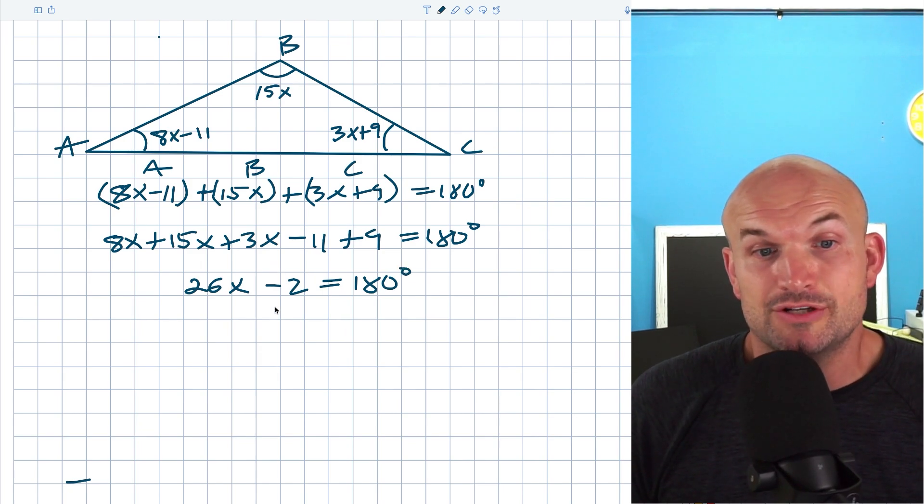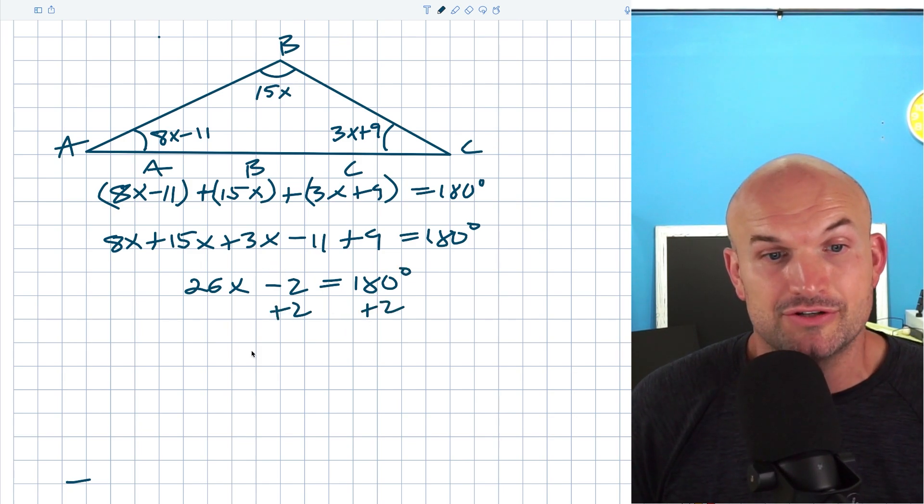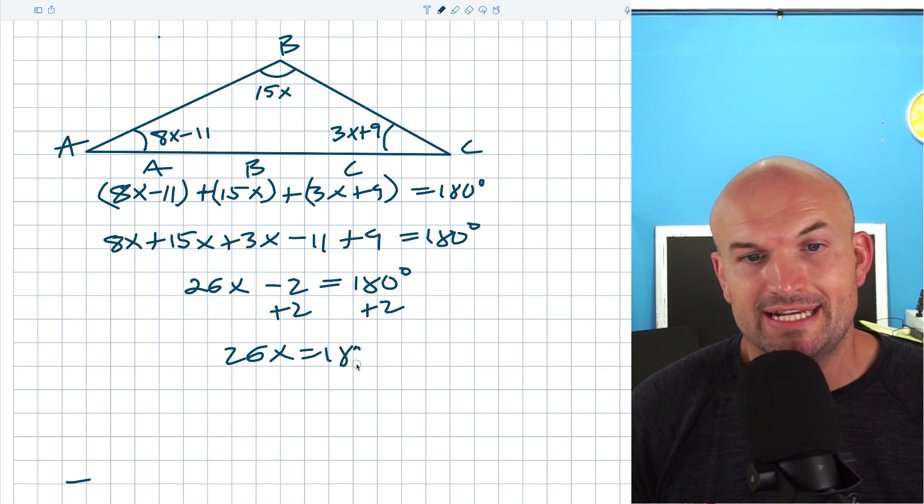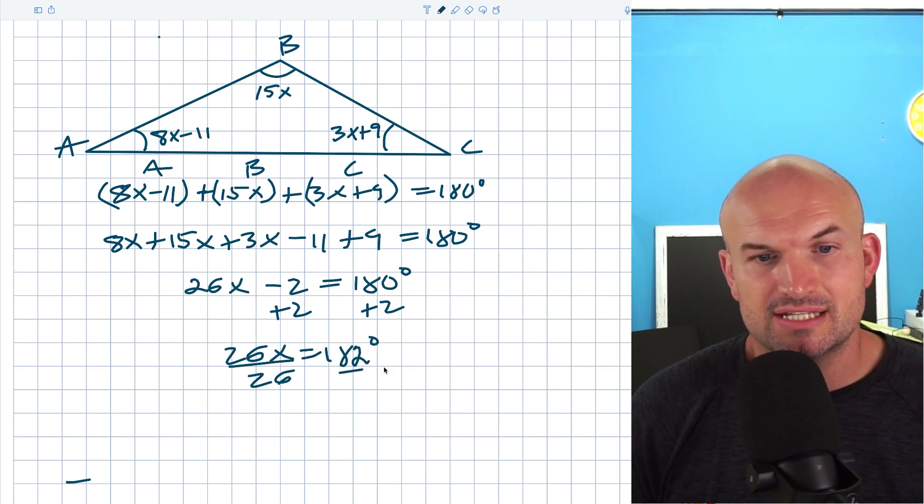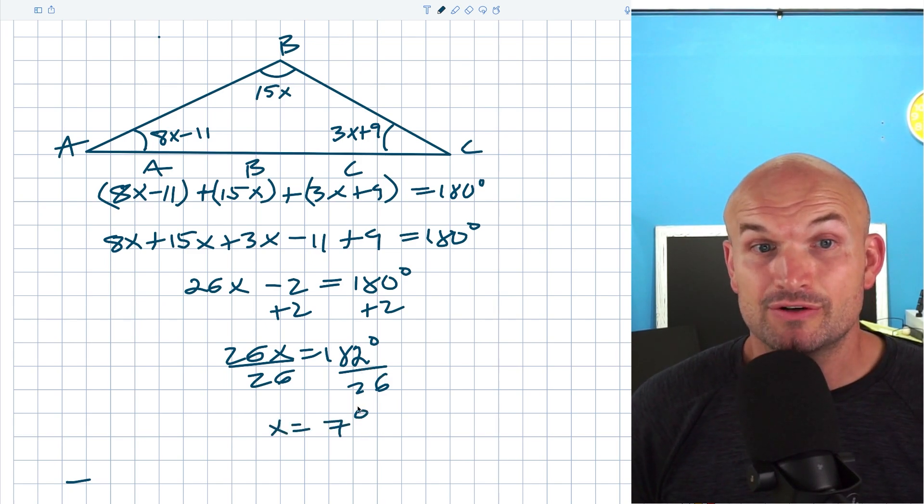Now what we have is basically a two-step equation. So I can add 2 to both sides and I get 26X equals 182 degrees. Then divide by 26, divide by 26. That's going to be 52 times 2, and therefore X is going to equal 7 degrees.